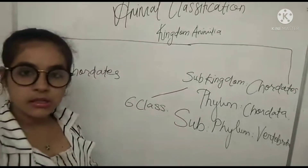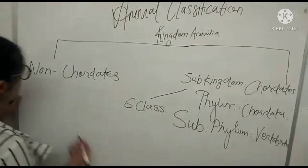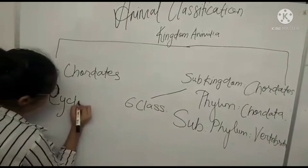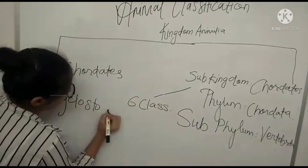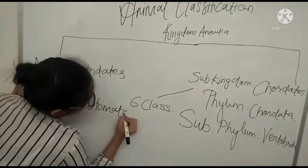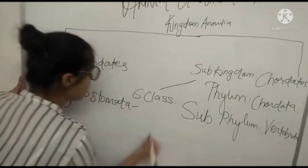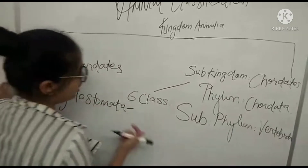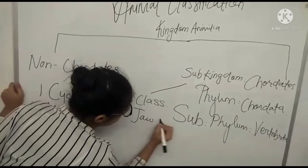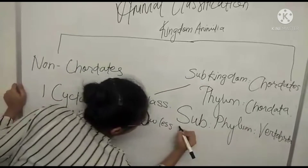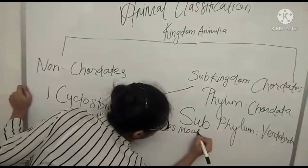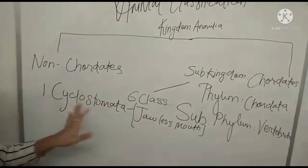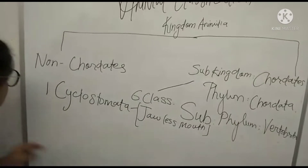Our first one is Cyclostomata. The characteristic of this organism is it has a jawless mouth.